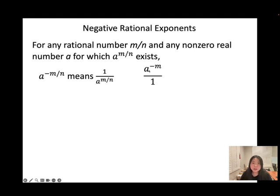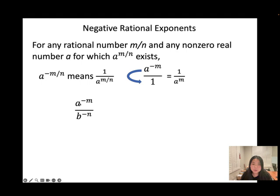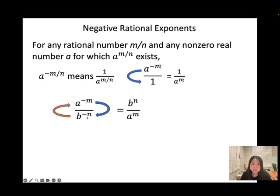Think of it this way: a to the power of negative m over 1 — when you have a negative exponent, you flip a to the power of m to the bottom, giving 1 over a to the power of m. For a to the power of negative m over b to the power of negative n: the numerator flips to the bottom and the denominator flips to the top, so the answer is b to the power of n over a to the power of m. When you have a negative exponent on the numerator, flip it to the bottom; on the denominator, flip it to the top. The negative exponent does not indicate the expression is negative.